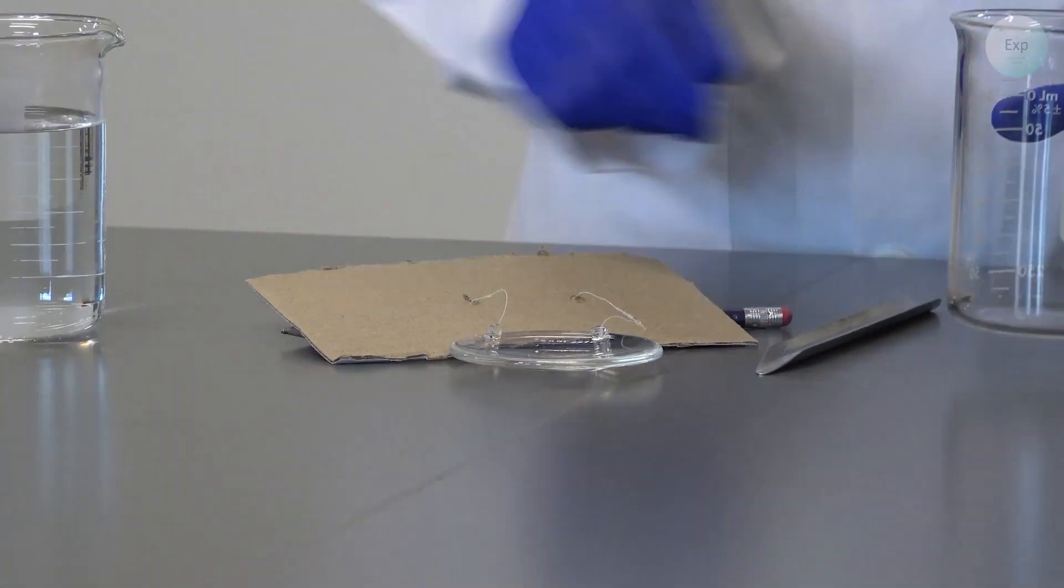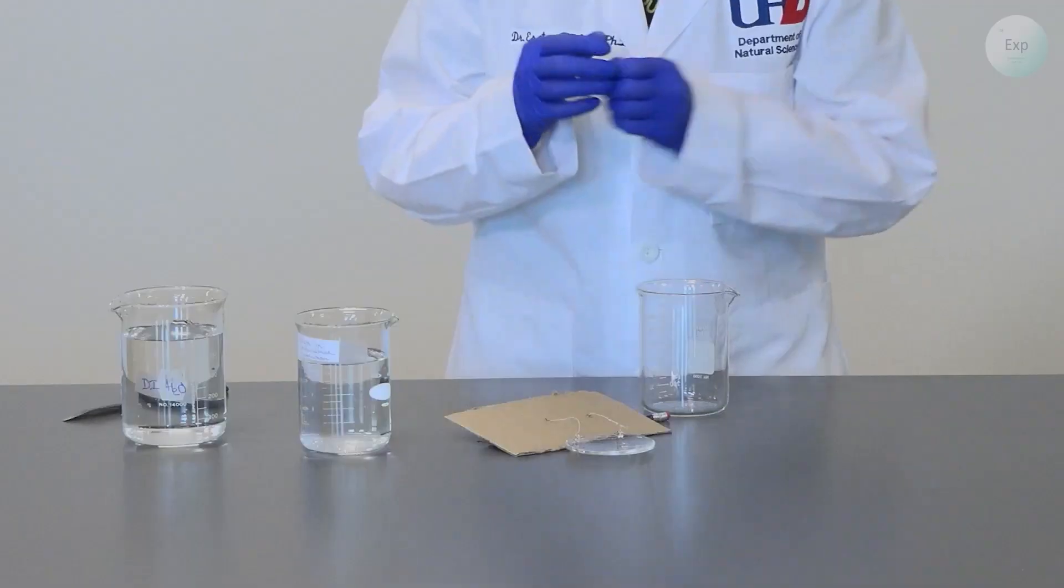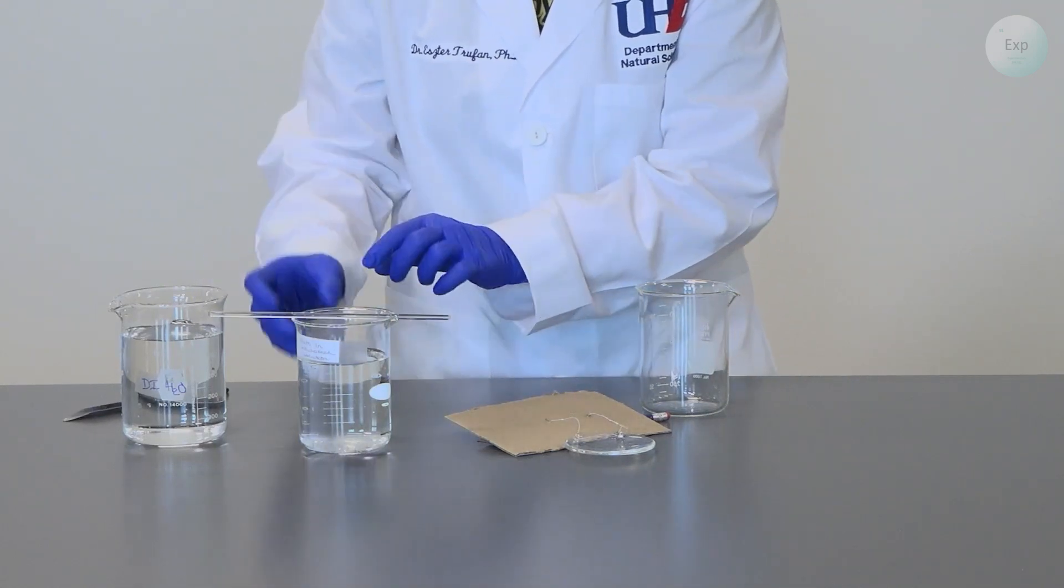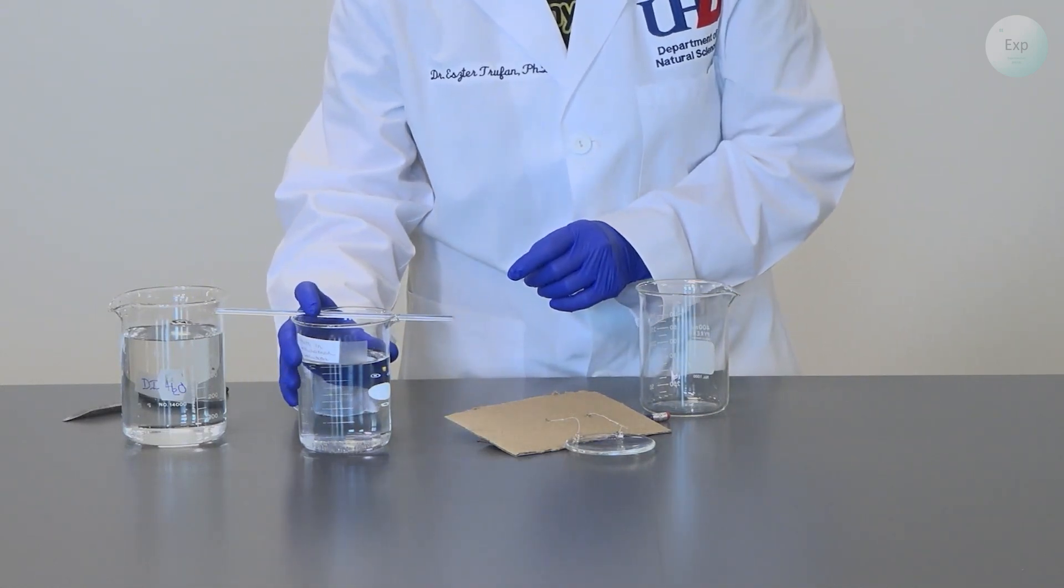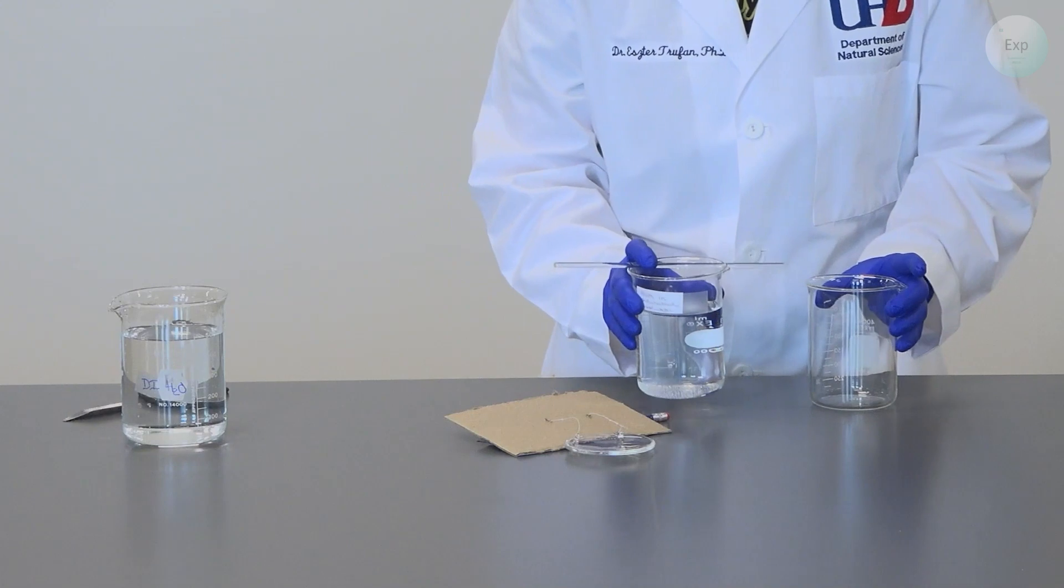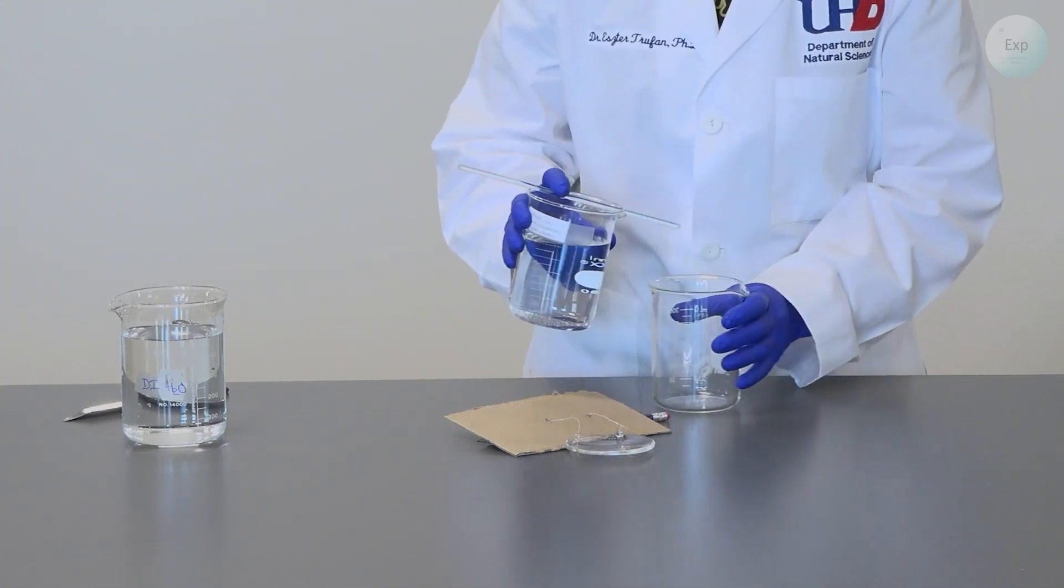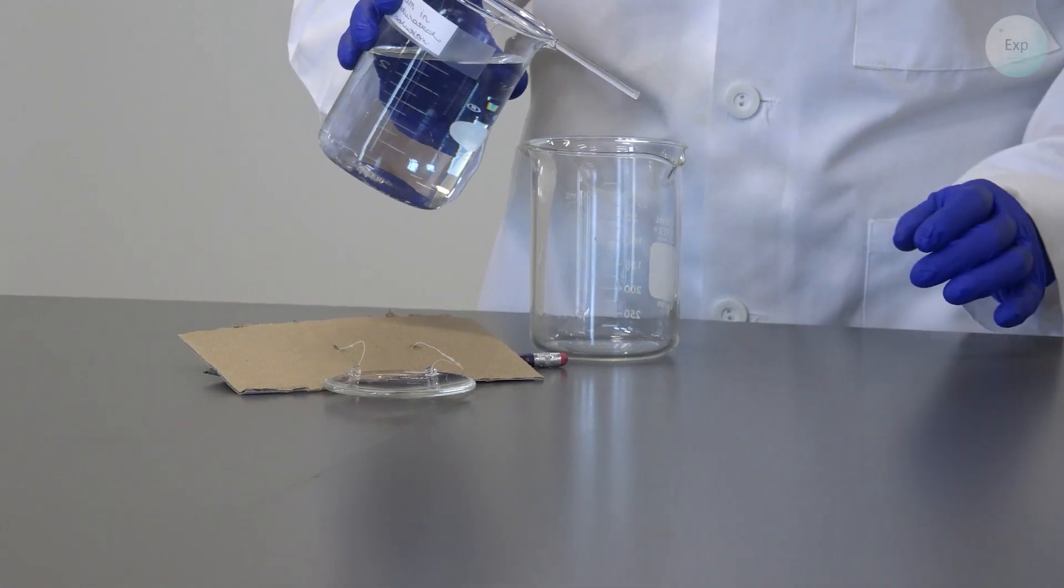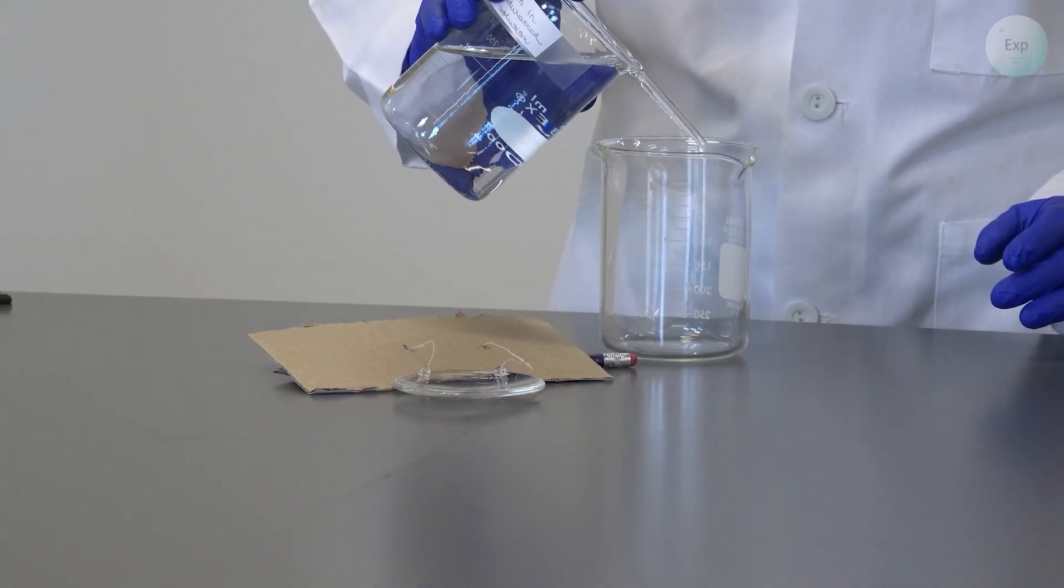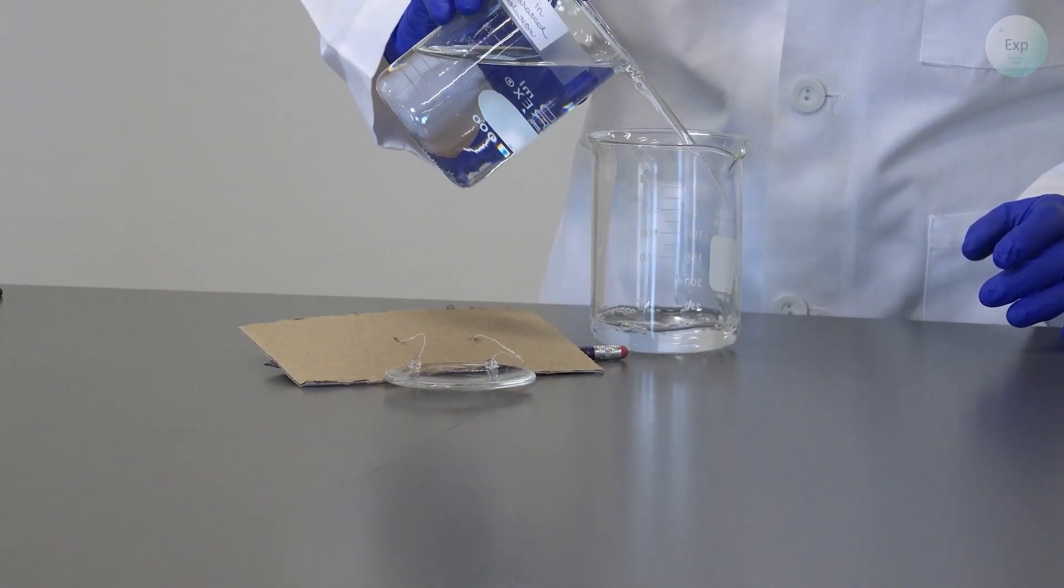Then I will decant my solution. For decanting, you want to place a stirring rod across the top of your beaker, just like this, and then as you lift it up and hold it in place, your solution will follow the path of your stirring rod and transfer to where you want to send it.